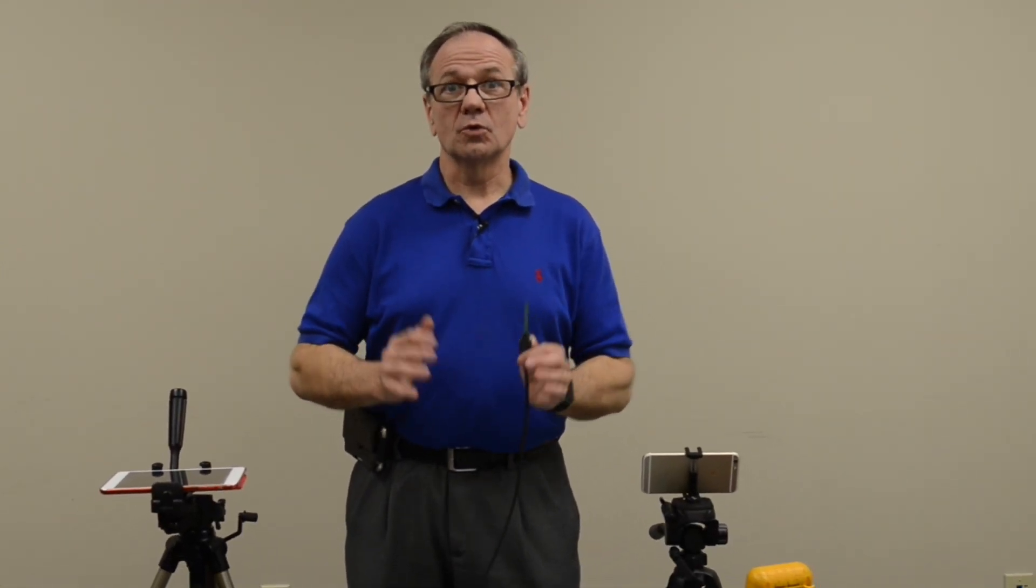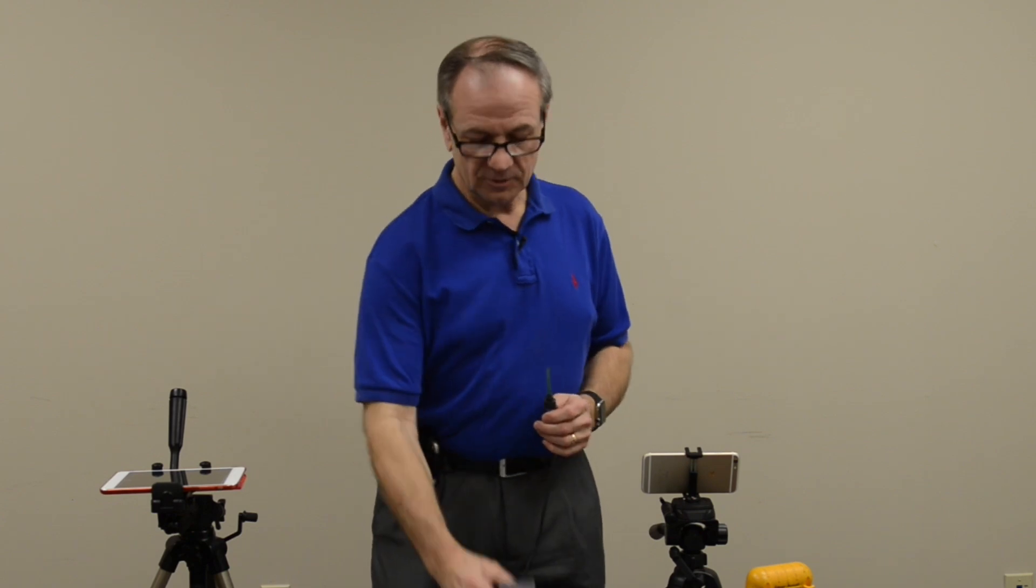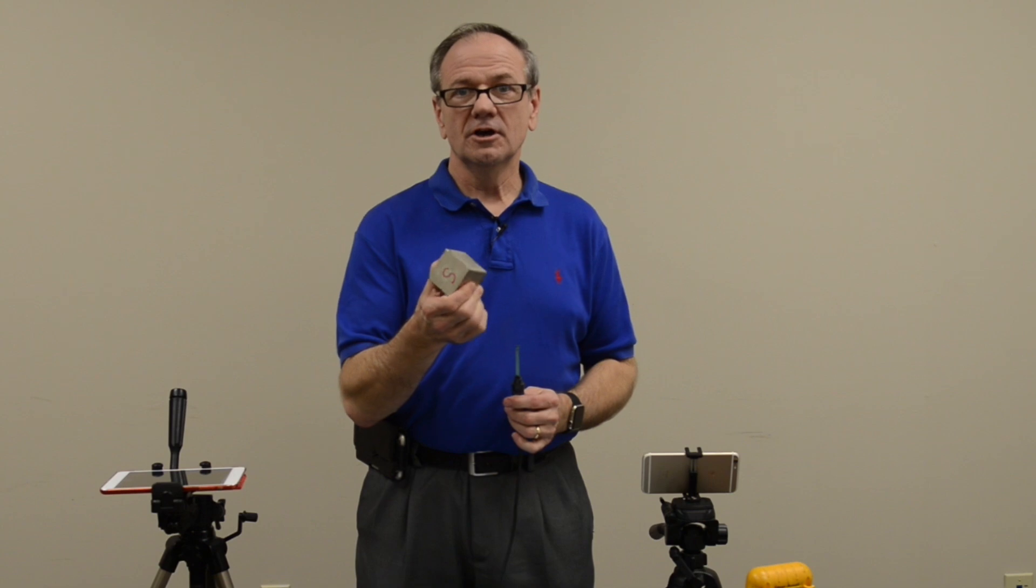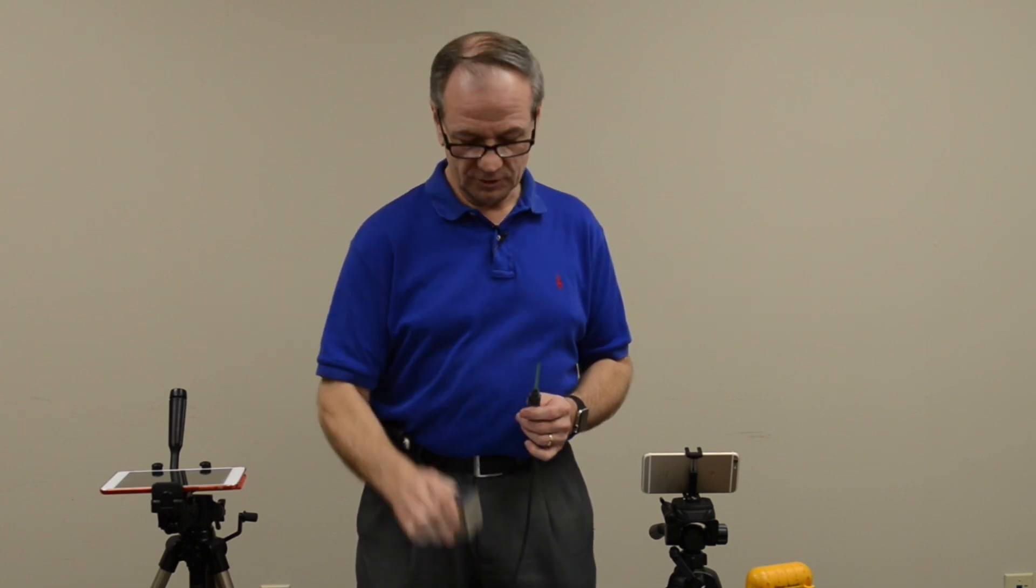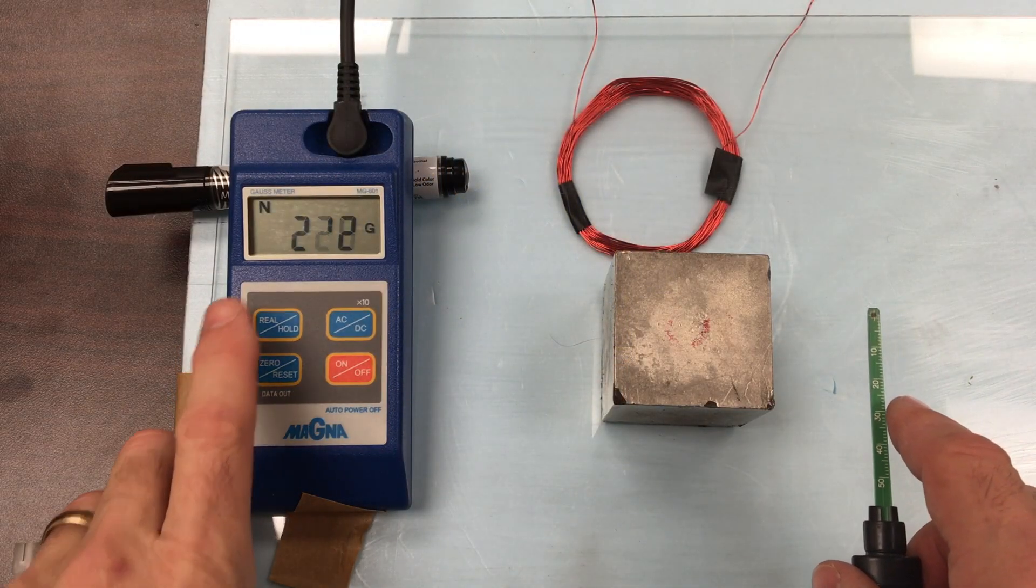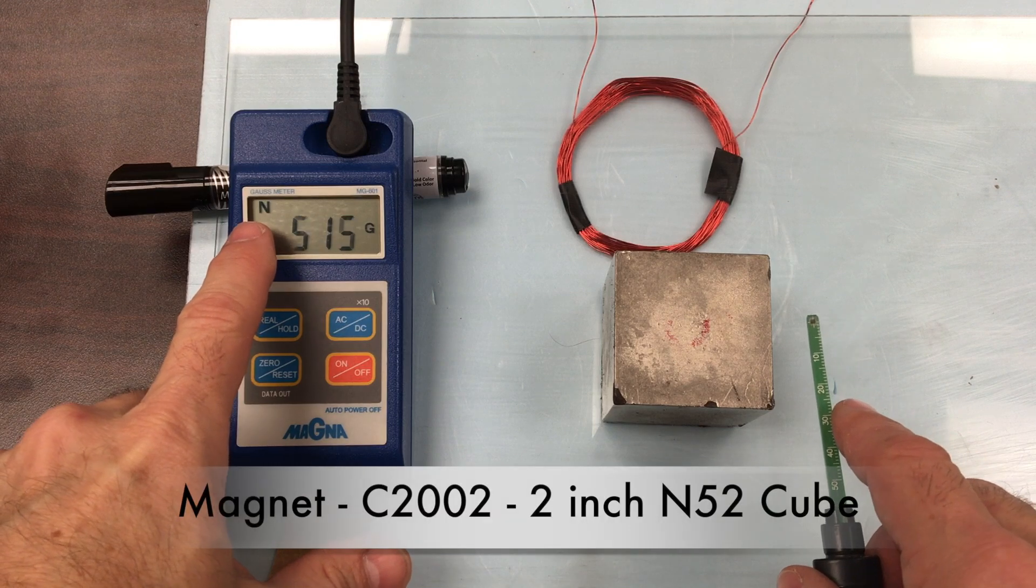To start with, the first thing we want to do is understand how the magnetic field works around a magnet. When you take something like this 2 inch cube, this is an N52 cube we're going to be using for most of what we do. As I take the gauss meter and you can see the end of it is where it is, it's coming across the magnet now.